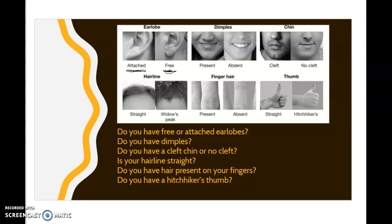Do you have a straight hairline, or when you pull up your hair on your forehead, do you have what's known as a widow's peak? Take a look at your fingers — between the two knuckles, is hair present or is it absent? And the last characteristic we're going to look at is your thumb. When you hold your thumb up, do you have a straight thumb, or does your thumb hyperextend at the joint, giving you what's called a hitchhiker's thumb?